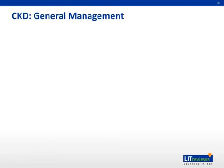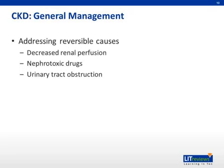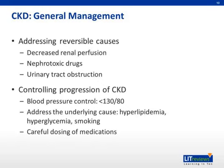Once a patient has been diagnosed with CKD, there are several important features of how the condition should be managed. First, one must address potential reversible causes of CKD, which may include decreased renal perfusion due to congestive heart failure or excessively controlled blood pressure, nephrotoxic drugs such as non-steroidal anti-inflammatory drugs, and urinary tract obstruction from conditions such as benign prostatic hypertrophy. The mainstay of CKD management is controlling disease progression, involving strict control of blood pressure to a target of less than 130 over 80, optimizing management of underlying causes such as hyperlipidemia, hyperglycemia, and smoking, and careful dosing of medications to avoid nephrotoxic effects and adverse effects due to reduced renal clearance of drugs.